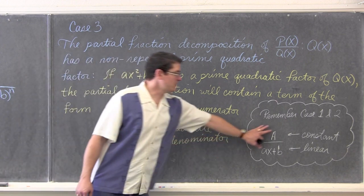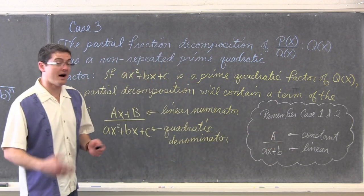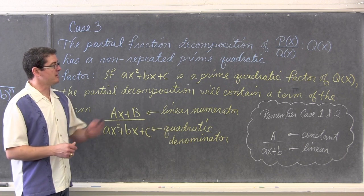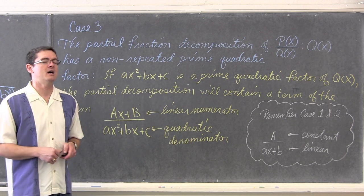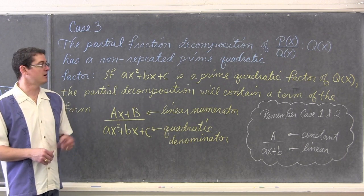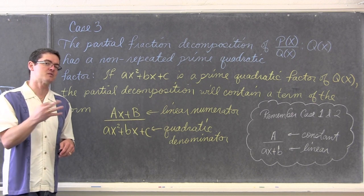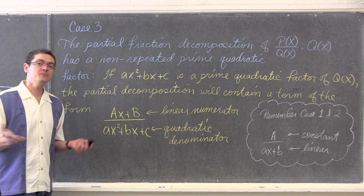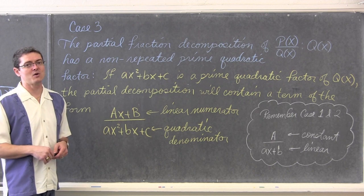We will be recalling case one and case two possibly in our examples, because we don't necessarily just have to have quadratic factors in our denominators. So let's get to our third example — or the first example where our denominator is a quadratic.